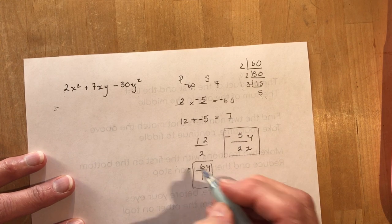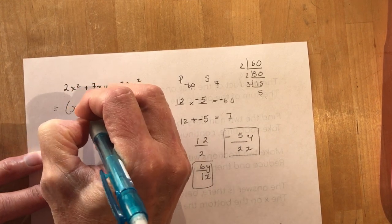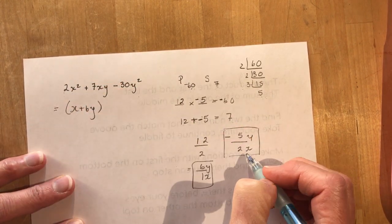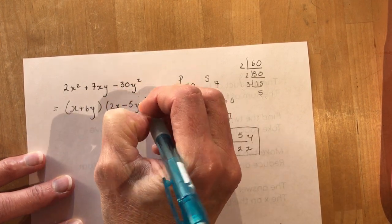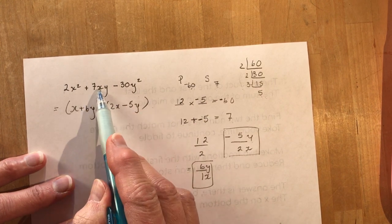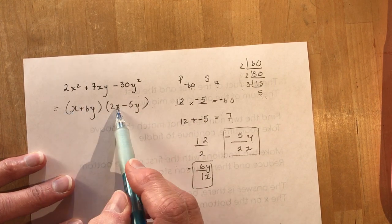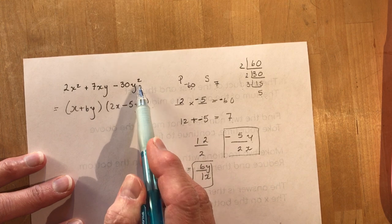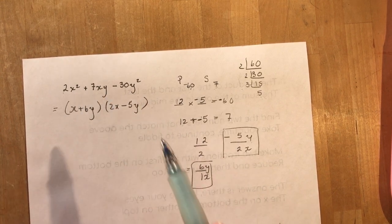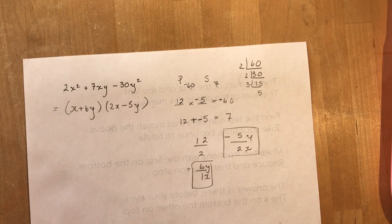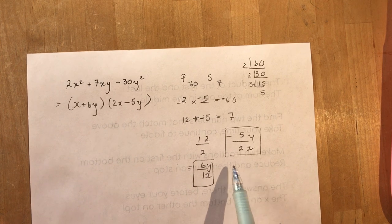So it gives me x plus 6y times 2x minus 5y. 2x minus 5y. And you can see when I expand that I get my xy term here. I still have 2x squared. I still have minus 30y squared. And I get my 7xy. That's as easy as it could possibly be. The little fraction method.